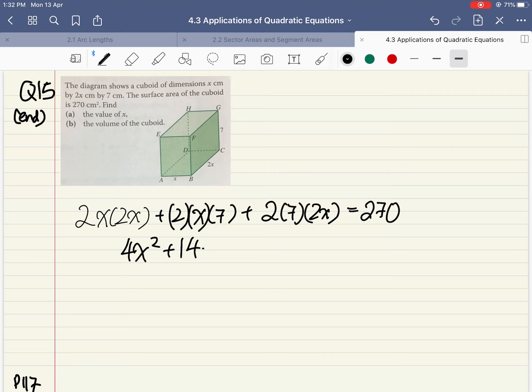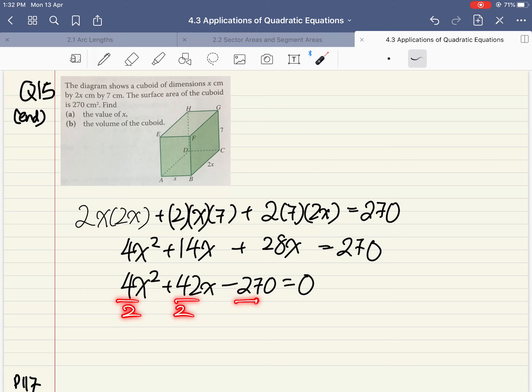If I simplify all of this, I'll get 4x² + 14x + 28x equals 270. Then if I start to simplify, I have 4x² + 42x - 270 = 0. I know you'll be tempted to whip out the frame to try to factorize this, but let's see if there's a way to simplify. All of these are divisible by 2, so if I divide by 2, I'll get something simpler to solve: 2x² + 21x - 135 = 0.